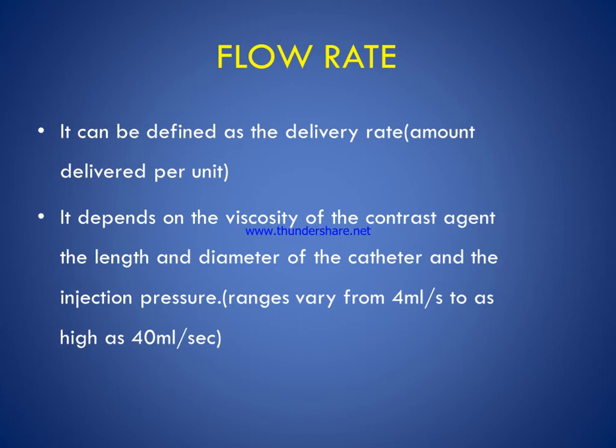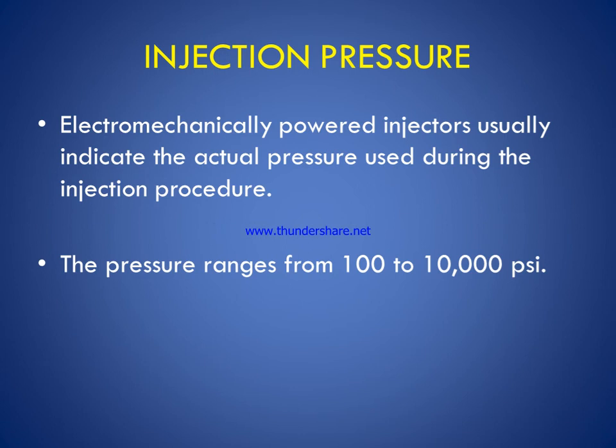Flow rate is defined as the delivery rate or amount delivered per unit time. It depends on the viscosity of the contrast agent, the length and diameter of the catheter, and injection pressure. It may vary from 4 ml to 40 ml per second. Injection pressure in an electromechanically powered injector indicates the actual pressure used during the injection procedure, ranging from 100 to 10,000 psi.